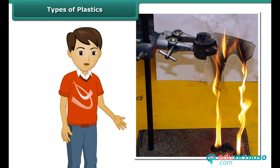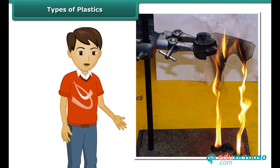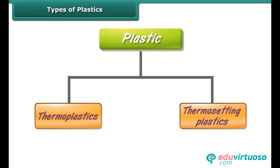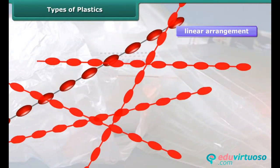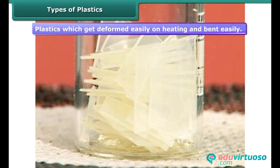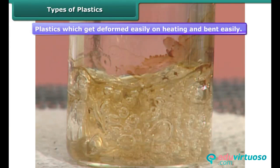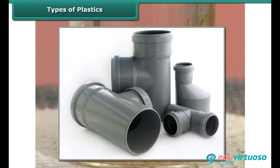Do all plastics melt upon burning? There are two types of plastics based on their reaction upon being heated: thermoplastics and thermosetting plastics. The constituent units of thermoplastics have a linear arrangement. On being heated, thermoplastics become mouldable and soft. They can be recast in different shapes and then cooled, causing them to harden, without any chemical change. Therefore, they can be recycled.